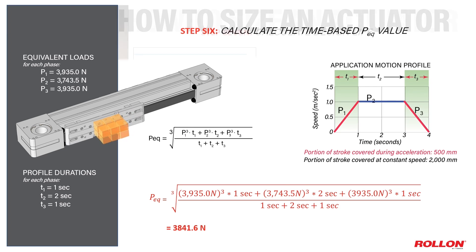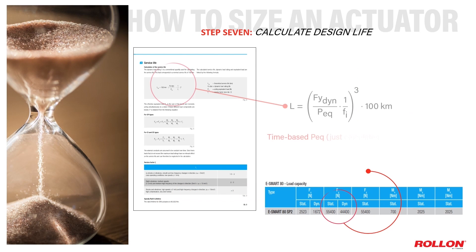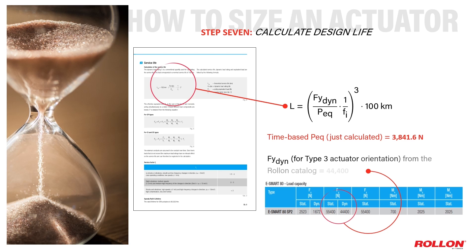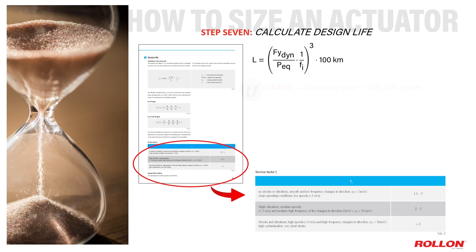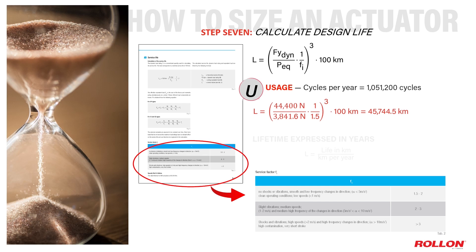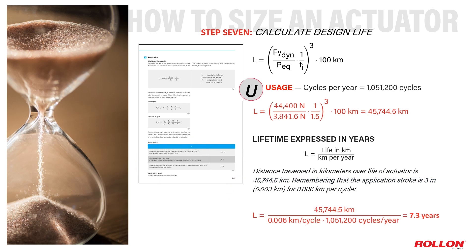Step seven, the final step in specifying an actuator, is to calculate expected actuator life. Here we use the dynamic load capacity value published in the Rollon catalog for calculating the lifetime of the actuator. This load corresponds to a nominal service life of 100 kilometers. The service factor F sub I accounts for the effects of vibration and shock loading — we chose 1.5 because our design isn't expected to be exposed to such conditions. Actuator life is expressed in both kilometers of carriage travel and years of operation. For our design, the Rollon actuator we selected will deliver nearly 7.3 years of trouble-free operation.